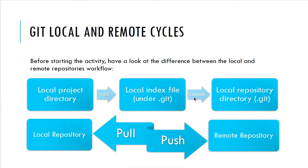After you have committed changes to the local repository, you issue a push request to the remote repository. A push request is just updating the remote repository with the files or changes that have been made to the local repository. If somebody else wants to review those changes or add new files, he or she has to first issue a pull request from the remote repository. A pull request pulls all the project files from the remote repository to a local repository, and will create one if it doesn't already exist.